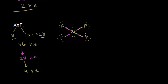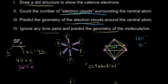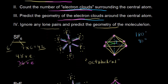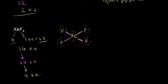After drawing the dot structure, we count electron clouds. The 4 sets of bonding electrons are each regions of electron density, and we have two lone pairs, each also a region of electron density — giving us 6 electron clouds total. Six electron clouds want to get as far apart as possible, so they adopt an octahedral arrangement.